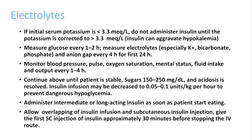Continue all these steps until the patient is stable, with blood sugar between 150 and 250 mg/dL and acidosis resolved. ABG should show no acidosis and no ketone bodies in blood. Insulin infusion may then be decreased to 0.05 to 0.1 units per kg per hour to prevent dangerous hypoglycemia. Administer intermediate or long-acting insulin as soon as the patient starts eating.